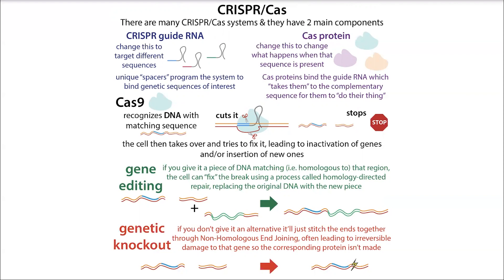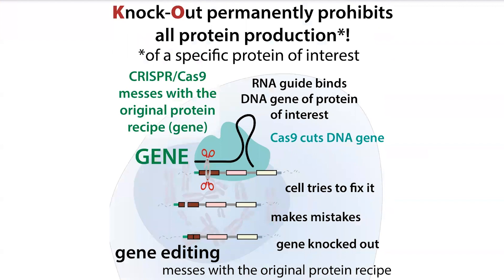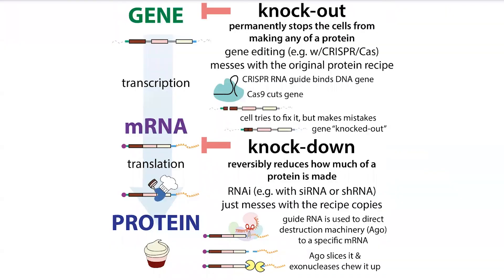That's a knockout as opposed to a knockdown. With CRISPR-Cas9, you program the protein with an RNA guide telling it where to cut, it cuts the gene, the cell tries but fails to fix it correctly, and you get an irreversible error that damages the gene permanently in those cells and all cells descended from them. So: knockout damages the actual gene and is permanent and fully eliminates expression; knockdown reduces messenger RNA levels and is temporary and partial.